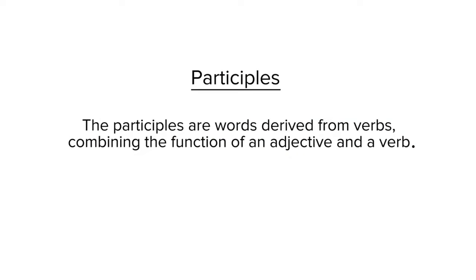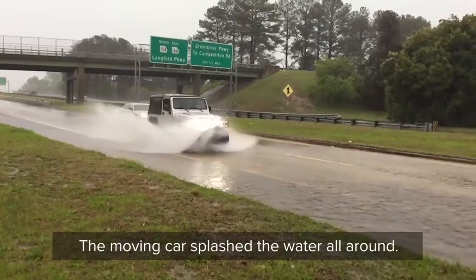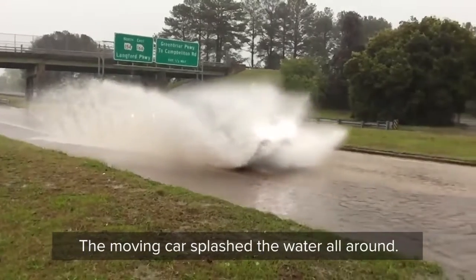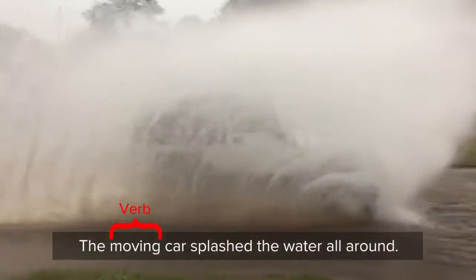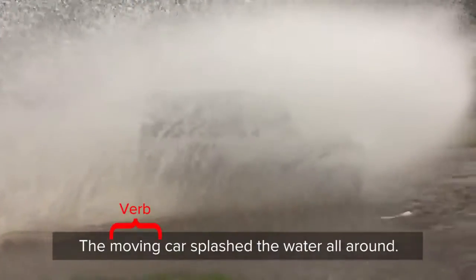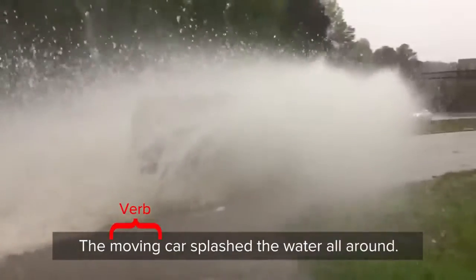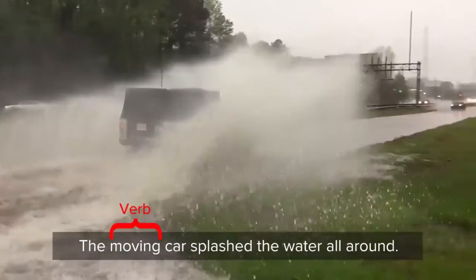The participles are words derived from verbs, combining the function of an adjective and a verb. For example, the moving car splashed the water all around. In this sentence, the word moving is formed from the verb move and is also acting as an adjective. Hence, it is a participle.